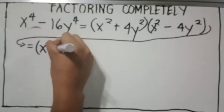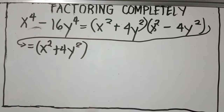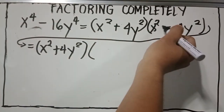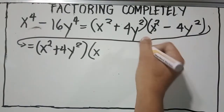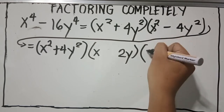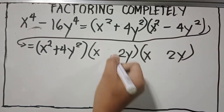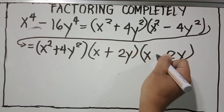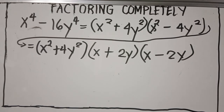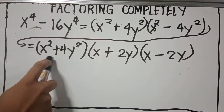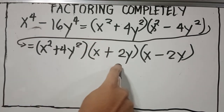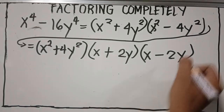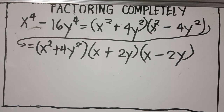Since x² + 4y² is no longer factorable, we simply copy it. Then we factor x² − 4y²: the square root of x² is x, the square root of 4y² is 2y. So the complete factored form of x⁴ − 16y⁴ is (x² + 4y²)(x + 2y)(x − 2y).